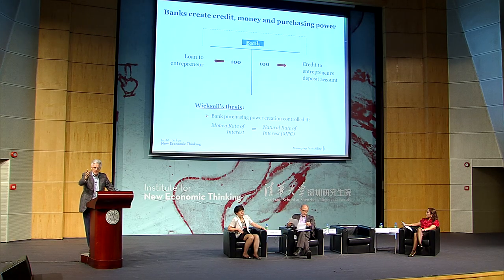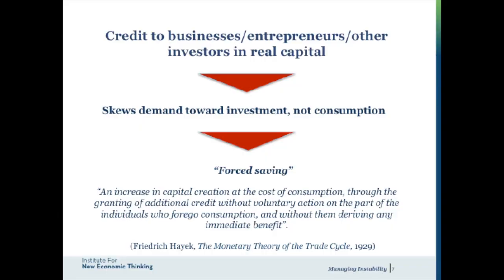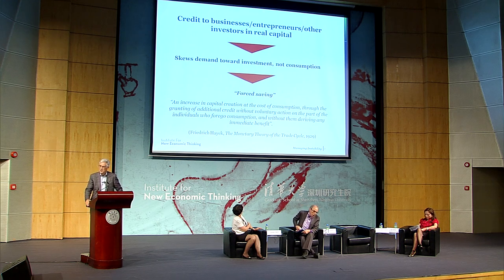If banks create purchasing power, it is crucial to ask: to whom do they give that purchasing power? If they give purchasing power primarily to businesses, to entrepreneurs, to state-owned enterprises, then they can achieve a skew of the economy towards investment, not consumption. They can essentially produce what Hayek — Friedrich Hayek, another great earlier economist — thought of as forced savings. Hayek described forced savings as an increase in capital creation at the cost of consumption through the granting of additional credit without voluntary action on the part of individuals who will forgo consumption and without them deriving any immediate benefit.